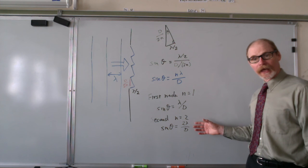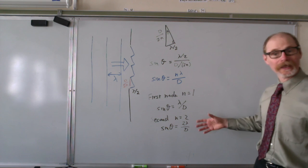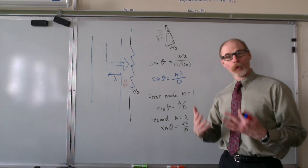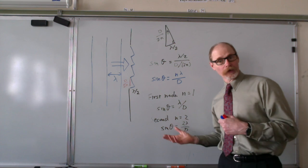You're only going to get a second node when the slit width is more than 2 wavelengths, and so on.